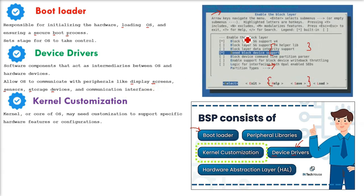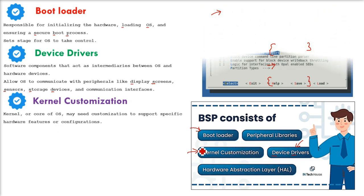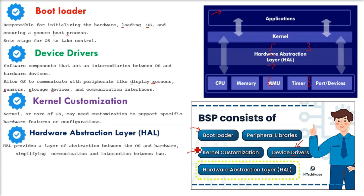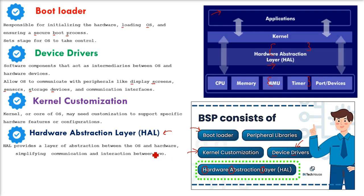The kernel, or the core of the OS, may need customization to support specific hardware features or configurations. Then we have the HAL, the hardware abstraction layer. The HAL provides a layer of abstraction between the OS and the hardware, simplifying the communication and interaction between the two.